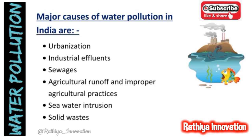The first cause is urbanization. The second one is industrial effluents — waste released from industries. The third one is sewage, which is polluted water. The fourth one is agricultural runoff and improper agricultural practices. The fifth is polluted water intrusion, and the final one is solid wastes. So these are the six major causes of water pollution in India.